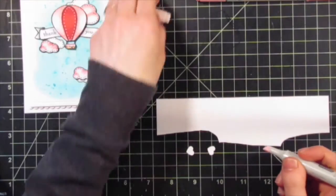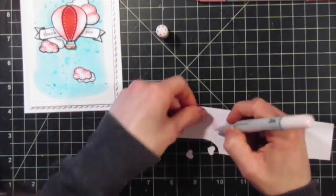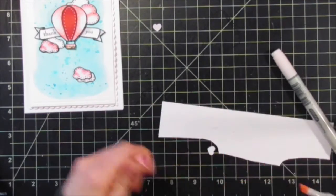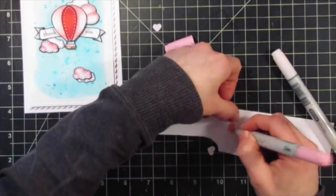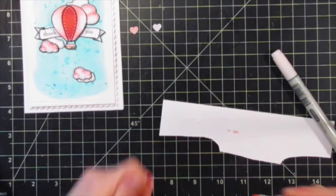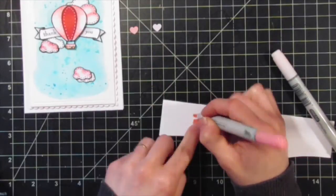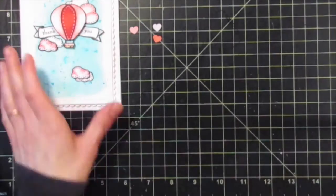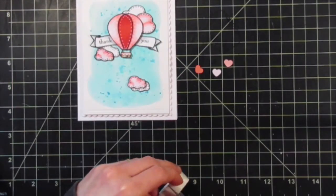Now I'm taking some little punched hearts that I punched out, and I'm coloring them with the three pink Copic markers that I used to color the pink in the balloon - that was RV00, RV21, and RV13. Then I'll attach those with foam tape to my panel.